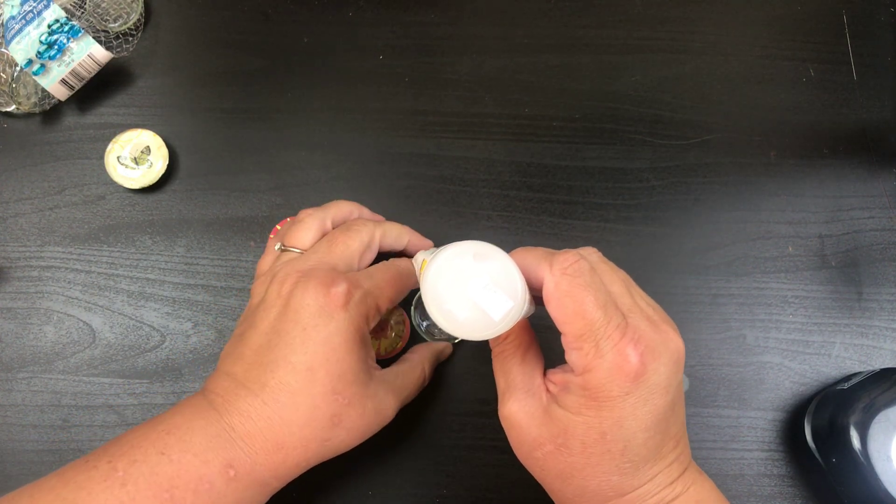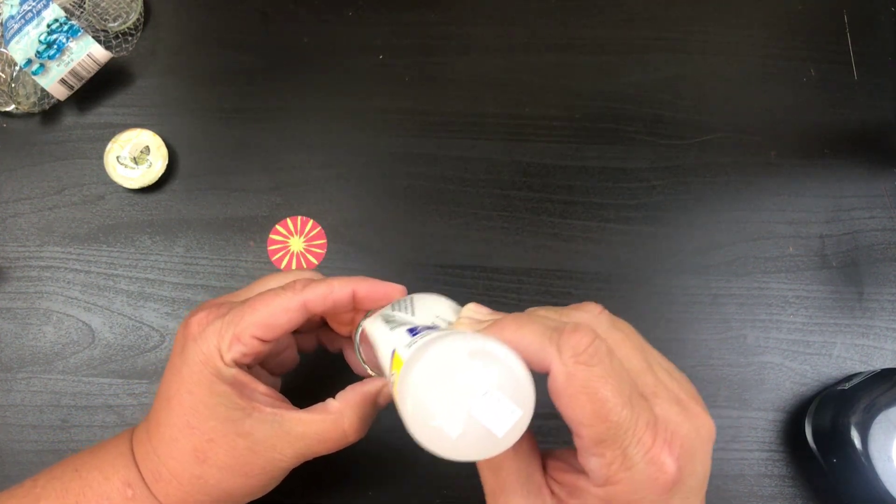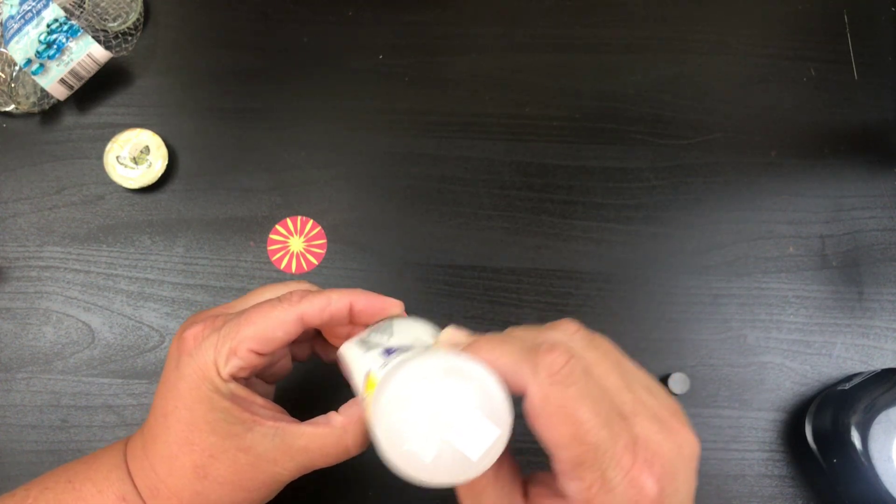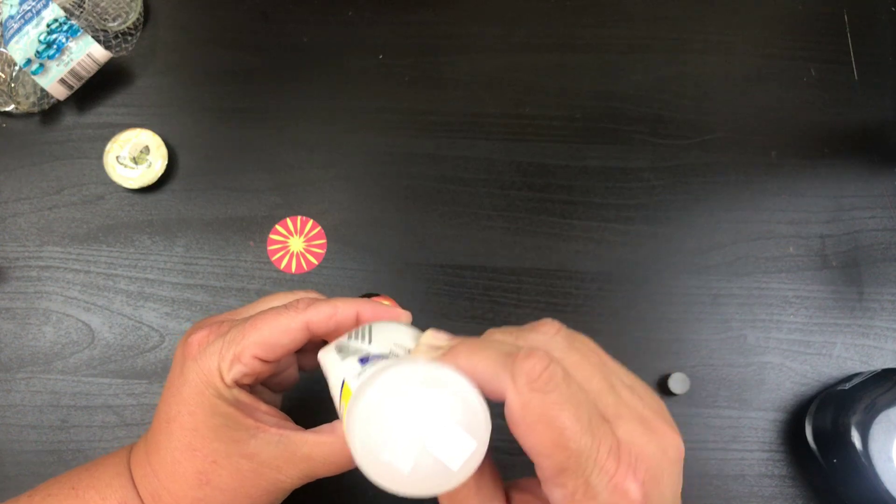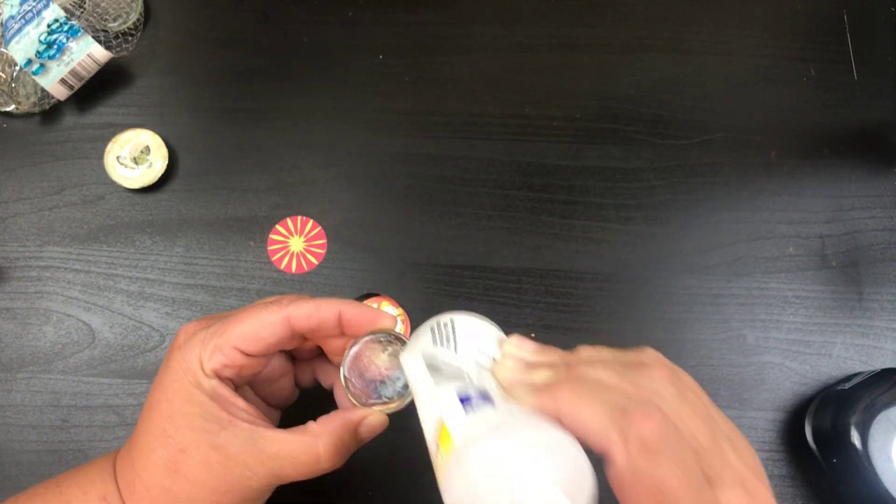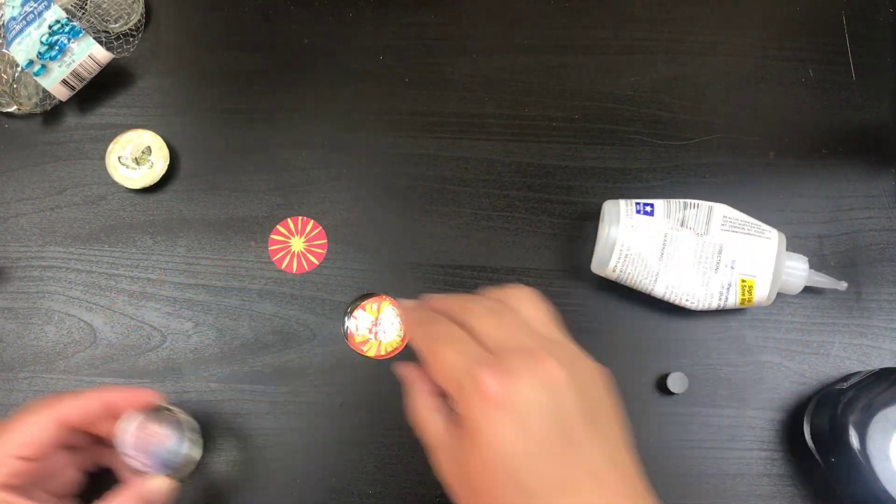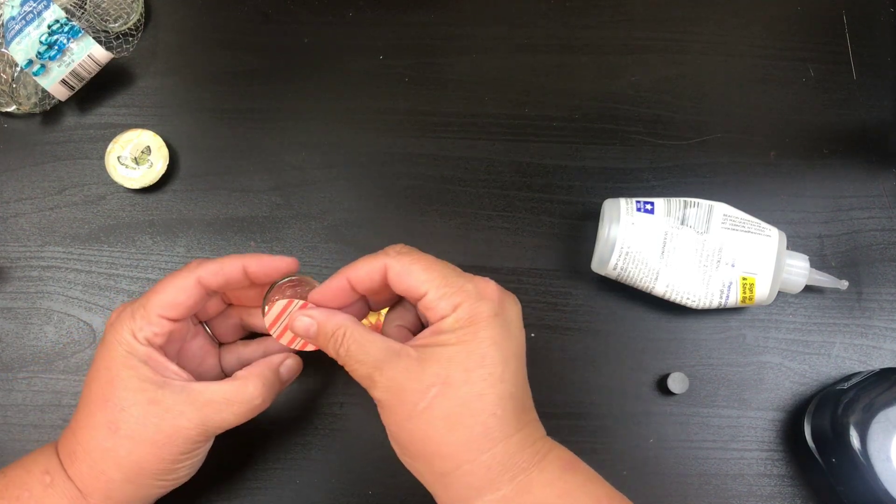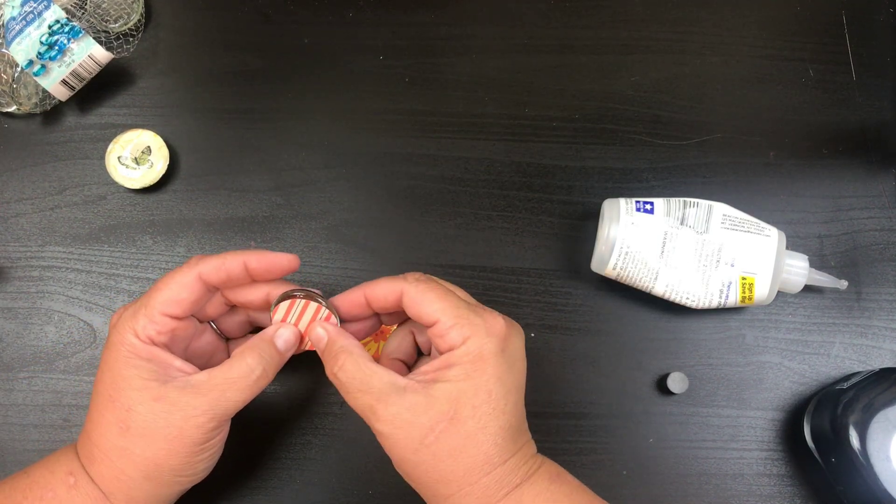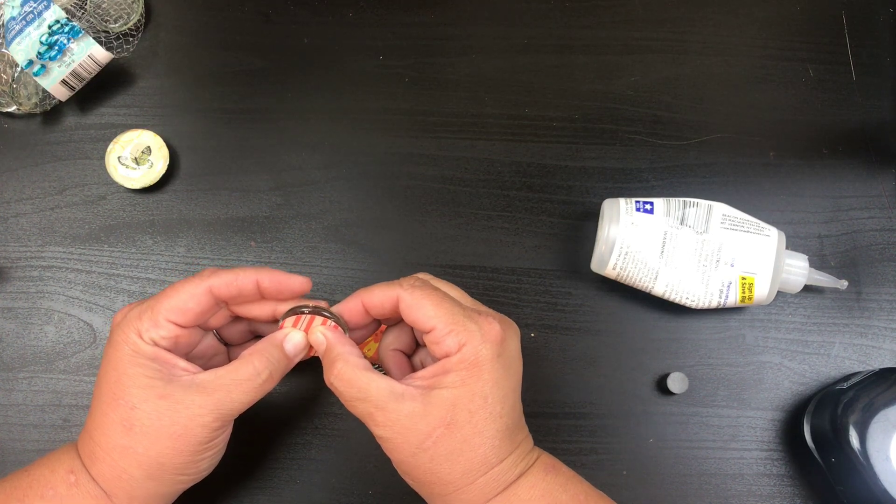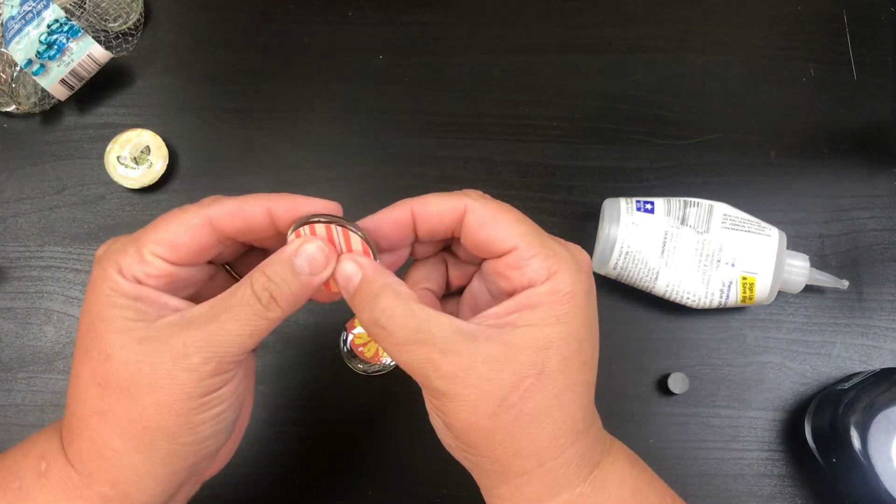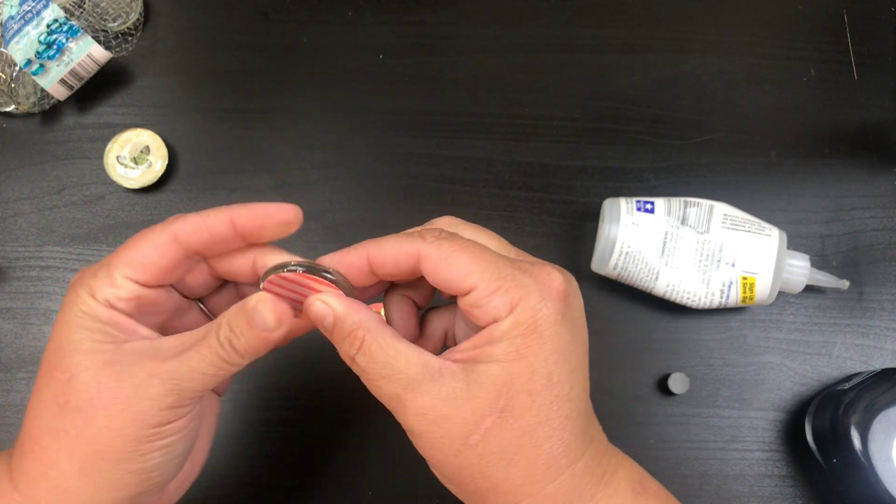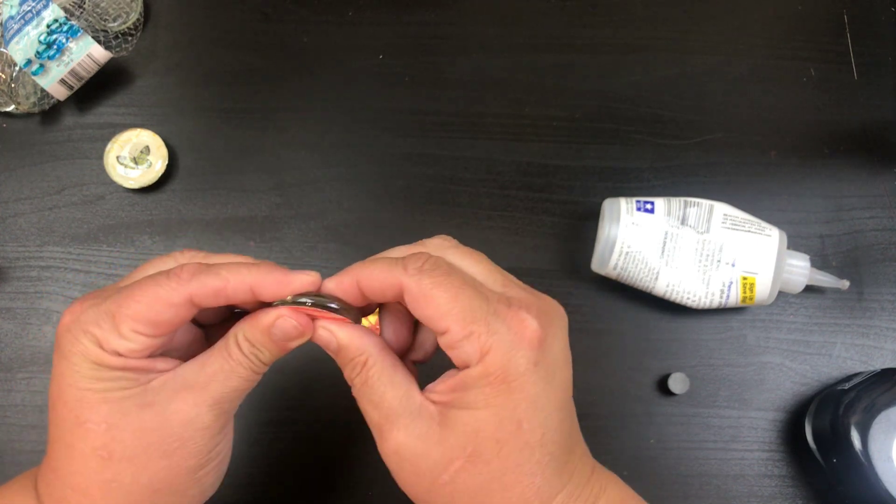And then just rub it all around. Again, remember this is gonna dry clear. There we go. We're gonna take this guy. I'm gonna grab a little over-spillage on the side there. We're gonna push that down rather tightly because we want it to go onto the sides. We want to push any air bubbles out.